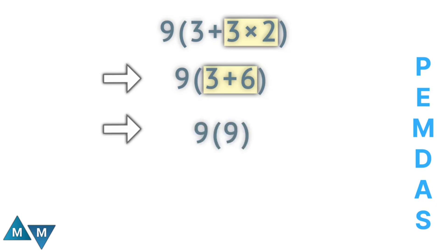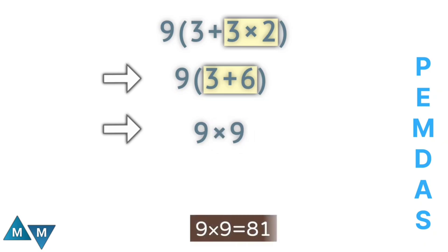Now we're done with everything inside the parentheses, so we can start thinking about the numbers outside. Nine next to the parentheses is actually multiplication, and that's all we have to do. Nine times nine is 81. This is our final answer.